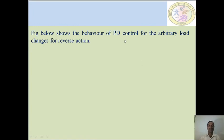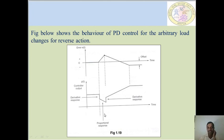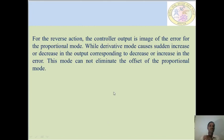The following figure shows the behavior of proportional derivative control for arbitrary load changes under reverse action. The error e(t) with offset over time is shown as positive, becoming the offset value. The controller output P(t) over time shows the derivative response and a proportional response inclined downward. For reverse action, the controller output is the image of the error for the proportional mode, while the derivative mode causes a sudden increase or decrease in the output. This mode cannot eliminate the offset of the proportional mode.